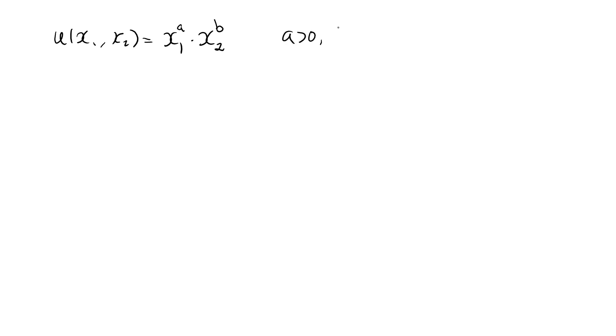These constants are strictly positive to guarantee well-behaved preferences. We want to maximize this utility function subject to p1x1 plus p2x2 equal to m. Let's find MRS for an arbitrary bundle x1, x2.